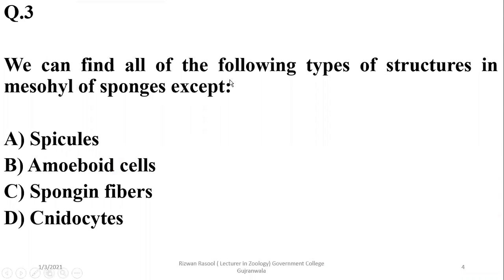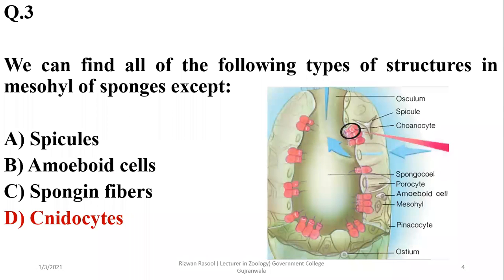Number three: We can find all of the following types of structures in mesohyl or middle of the sponges except—mesohyl of sponges contains spicules, amoeboid cells, as well as spongin fibers, but nidocytes are the characteristic features of cnidarians, not sponges. That's why the right option is delta.